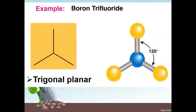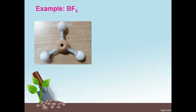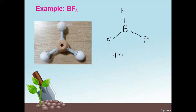The second basic shape is trigonal planar, and the example is boron trifluoride, BF3. To draw it, we draw the central atom boron in the middle, and then three straight lines representing the bonding pairs that connect boron to the three terminal fluorine atoms. Don't forget to write down the name of the shape: trigonal planar.